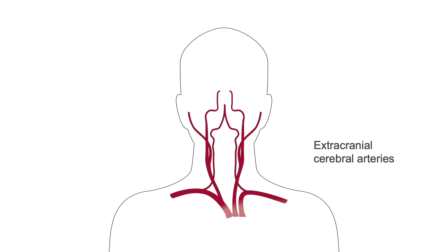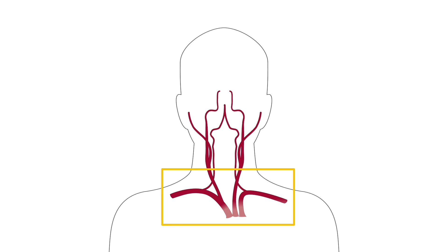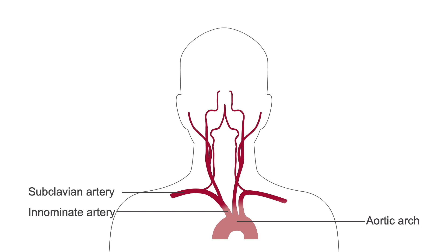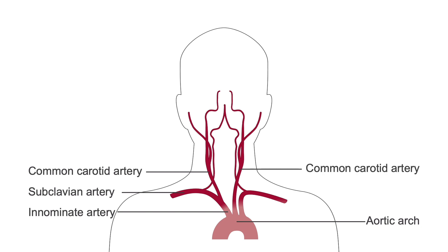During a carotid ultrasound investigation, you will image and report on the extracranial cerebral arteries. The origin of all of these arteries are found at the base of the neck, but their anatomy is not symmetrical. On the right side of the body, the innominate artery, also known as the brachiocephalic artery, arises directly from the aortic arch and then divides into the right subclavian artery and common carotid artery. However, on the left side of the body, the common carotid artery and subclavian artery both extend directly from the aortic arch.